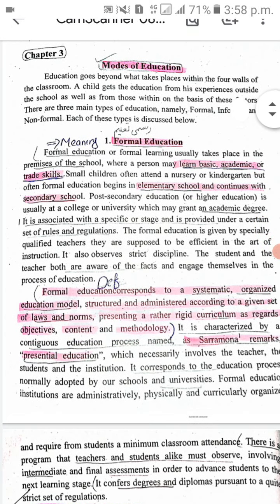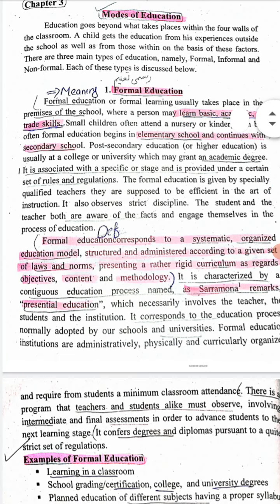What is formal education? Formal education and learning usually takes place in the premises of the school where a person may learn some basic academic or trade skills. Small children often attend nursery or kindergarten, but formal education typically begins in elementary school and continues into secondary school, and further into secondary school.